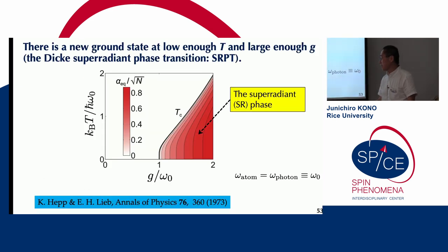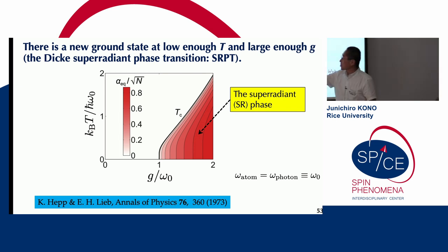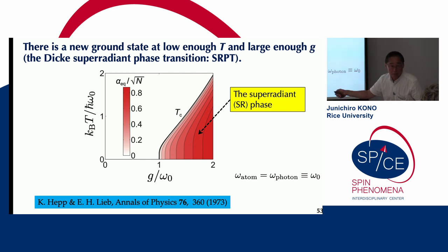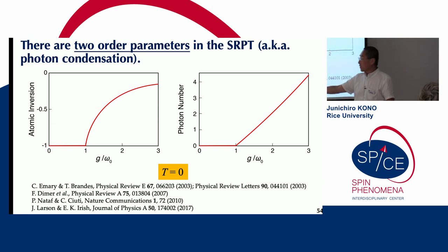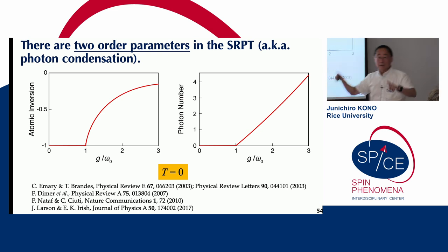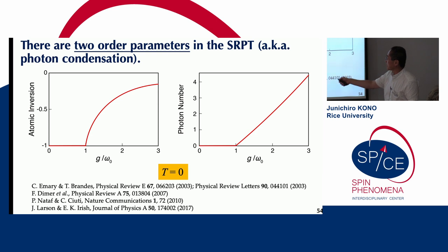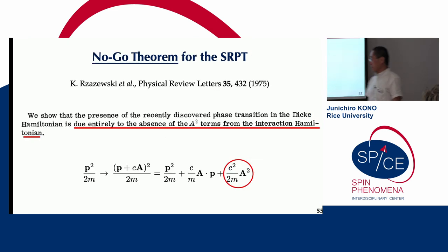This was first noted by Hepp and Lieb in 1973, who predicted a phase diagram as a function of normalized temperature and normalized coupling constant, predicting the existence of a new phase at low enough temperatures and high enough light-matter coupling constant. The most interesting situation occurs when temperature equals zero — a quantum phase transition. Even at T=0, when the light-matter coupling constant exceeds a threshold, atomic inversion appears. This is very strange because at T=0, all atoms should be in the ground state and photon number should be zero. But the number of photons becomes finite — that's why this transition is sometimes called photon condensation.